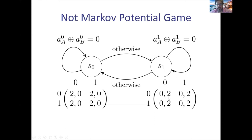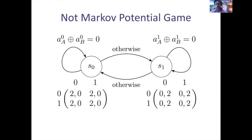You remain at s₀ only if the XOR of the two strategies is zero; otherwise you transition to s₁. At s₁ the payoffs are reversed, and you remain at s₁ if the XOR is zero, otherwise you transition. This is a setting where every state is trivially a potential game — if you always get the same utility regardless of action, you can define φ = 0 as a potential function.